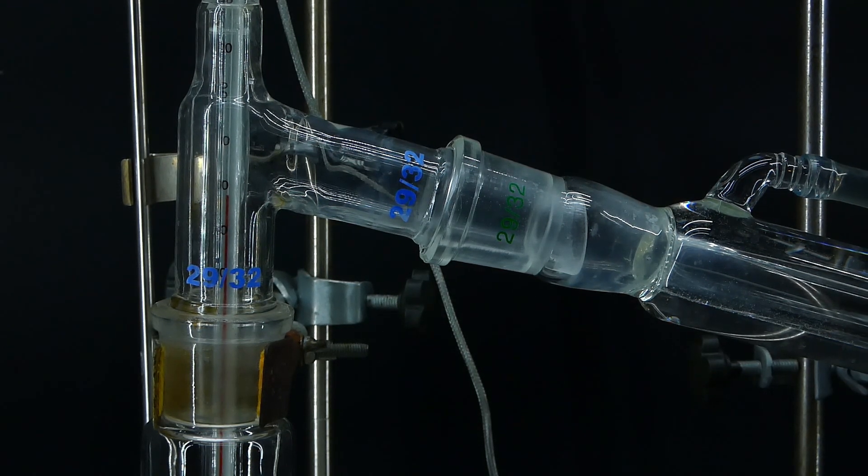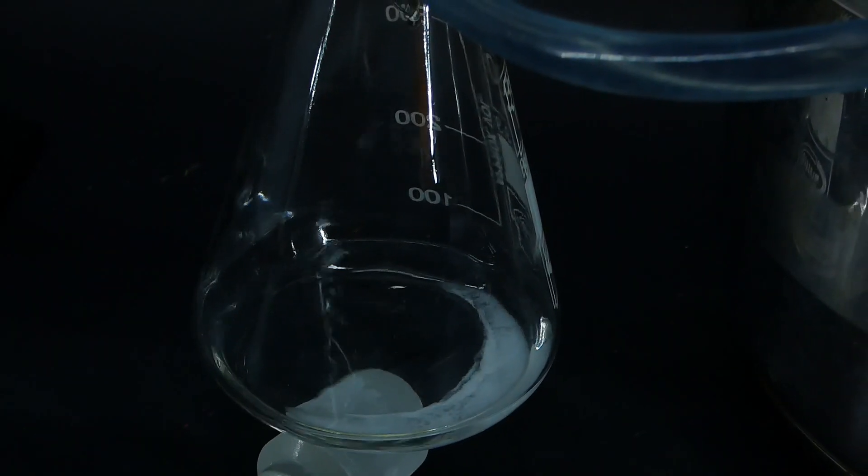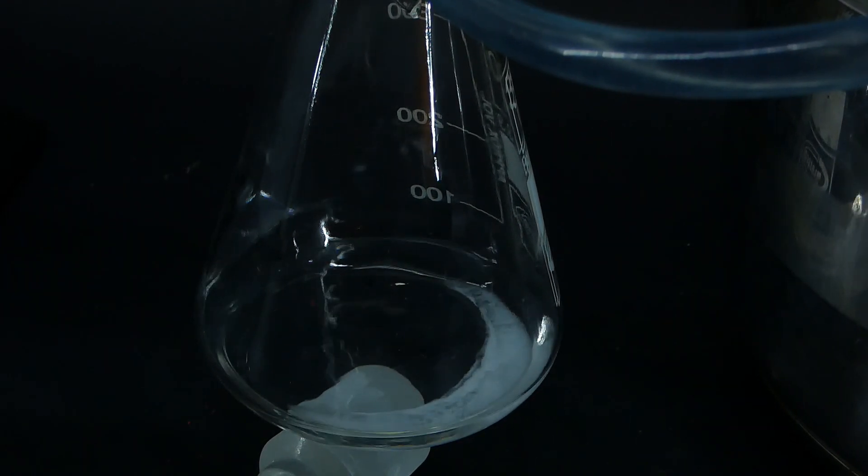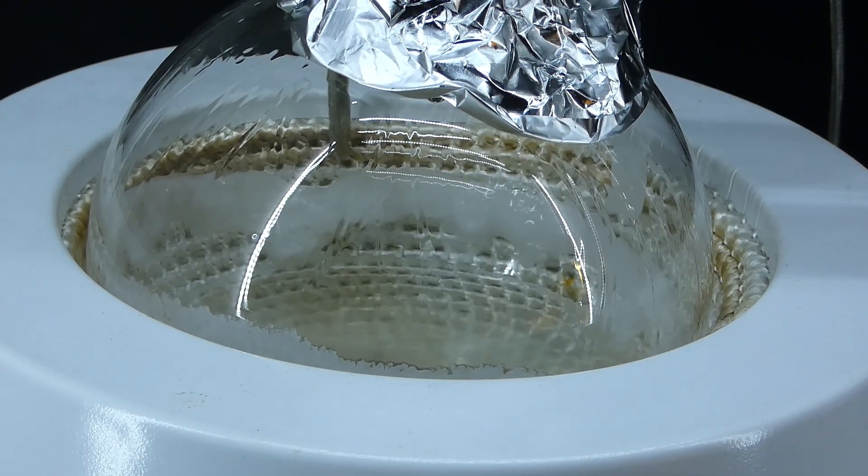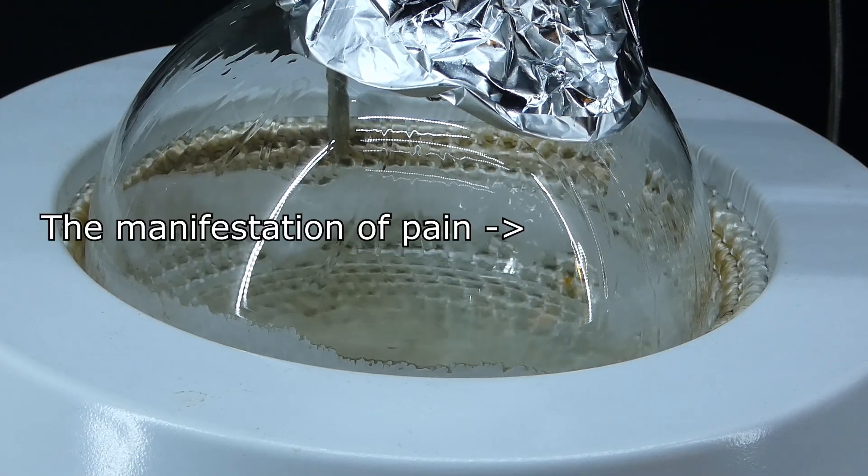It distilled over pretty quickly, and after a few minutes, I had a pretty nice amount of the distillate. In the boiling flask, some kind of white crust started to form, and it probably was just some unreacted boric acid, and by just looking at it, I knew that it would be a pain to clean.